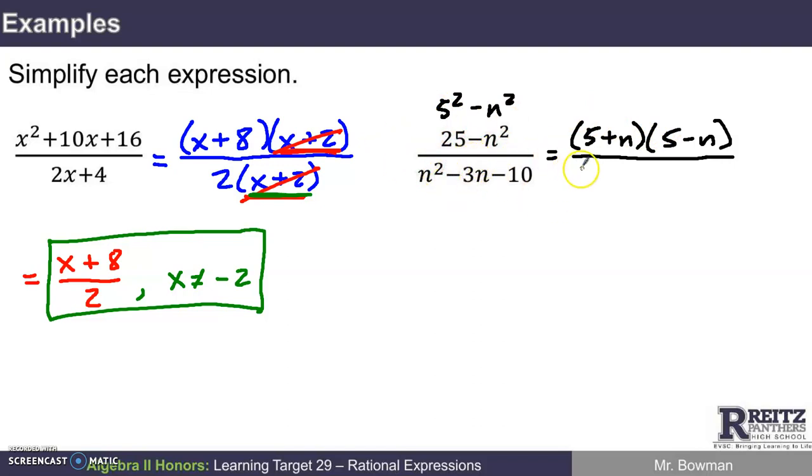The denominator, n squared minus 3n minus 10, will get me n times n for n squared, but I'm looking for two numbers that add up to negative 3 and multiply to negative 10. That's negative 5 and positive 2.